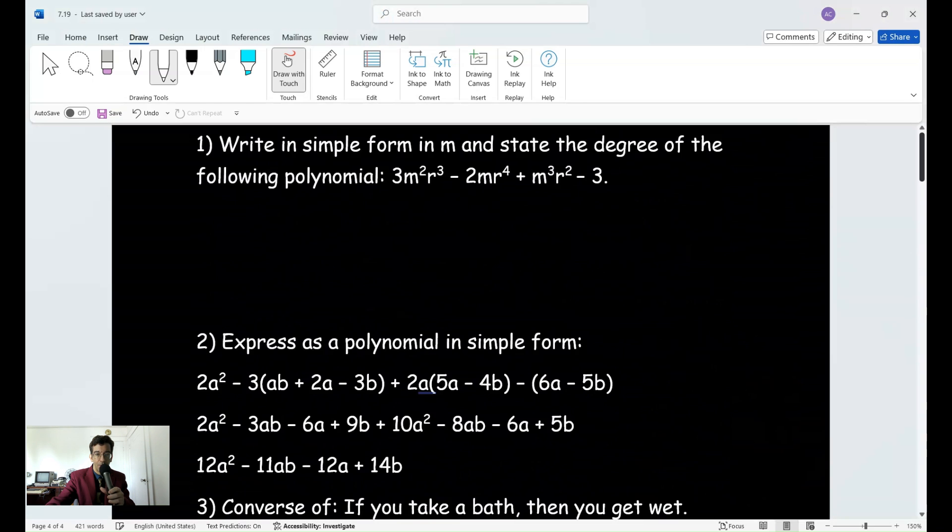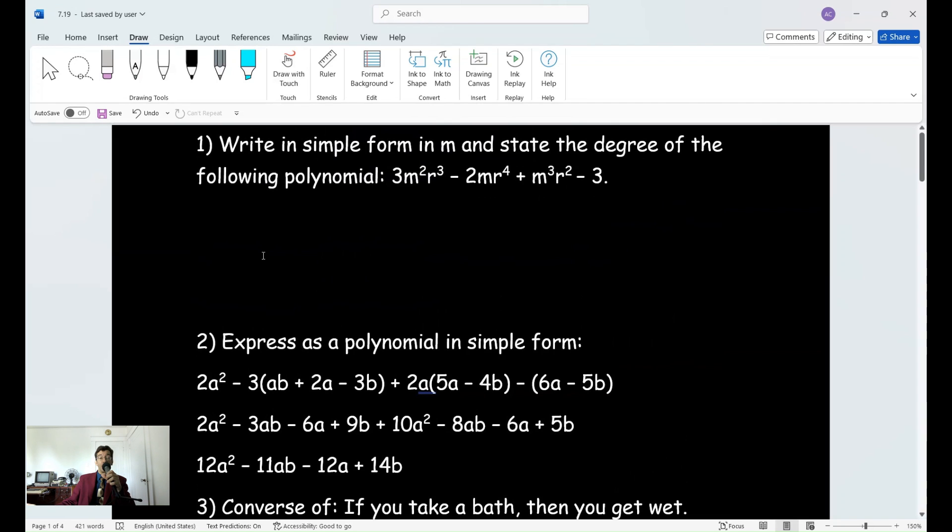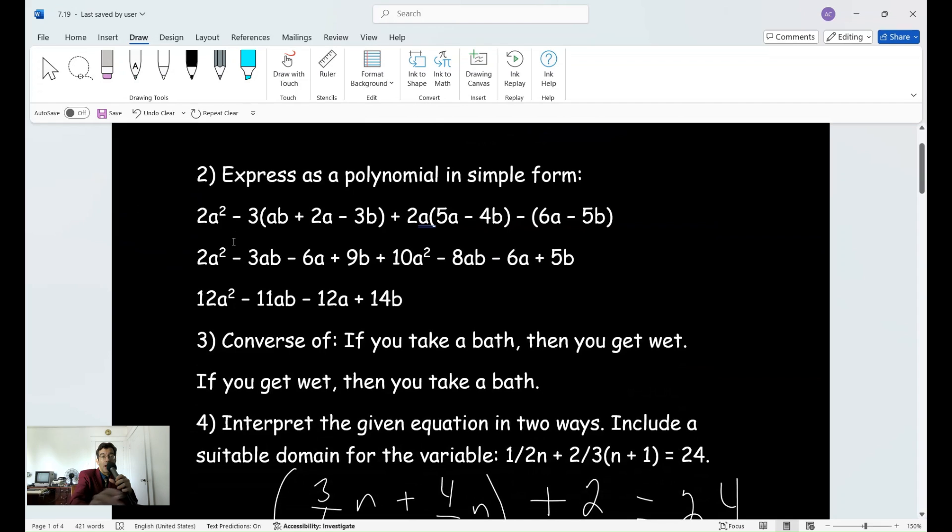So here are the solutions for number one. It says writing simple form in M and state the degree. Well, the polynomial is already in simple form. And the degree here is five. Remember that the degree of a term is the sum of the exponents. Those of you who are studying algebra two, the degree of a term is the sum of the exponents. So in all of these, the sum is five. So we would say that this is a polynomial with a degree of five. The second question is expressed as in simple form. You should have had 12a squared minus 11ab minus 12a plus 14b. It's an easy question. All it's really testing is the distributive property as well as the laws of exponents. If you multiply terms, what you do with the exponents, that's all it is.